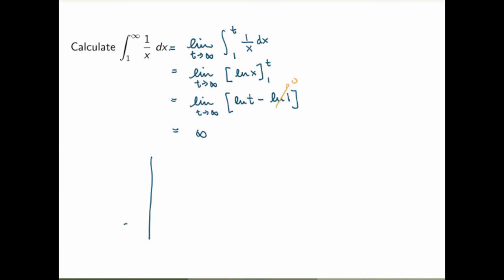What's quite interesting is that if you sketch the graph of 1 over x, it looks very similar to the function we had before, but it's slightly different, and it has very different behavior. What you're calculating is the area under the curve all the way to infinity. In the exponential case, that area was finite. Here, even though it looks very similar, the area is actually infinite. Just looking at a graph, it's very hard to see whether an improper integral will converge or not — you really have to evaluate the limits carefully.